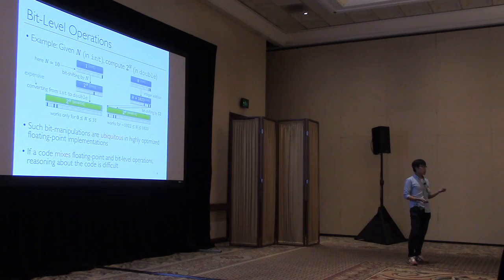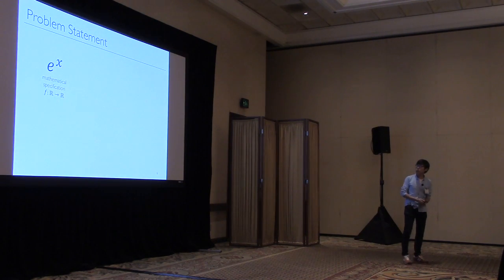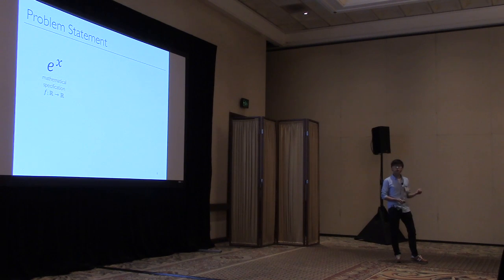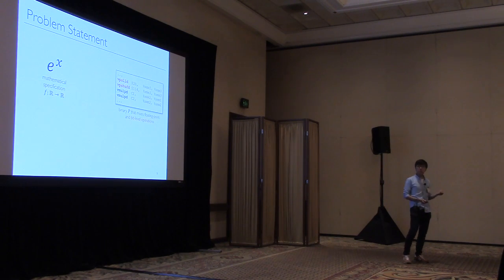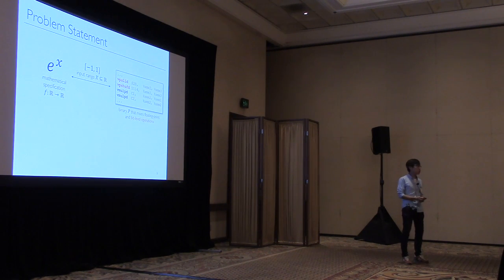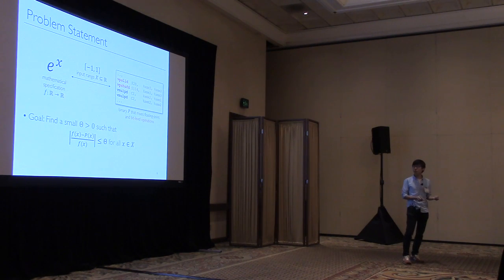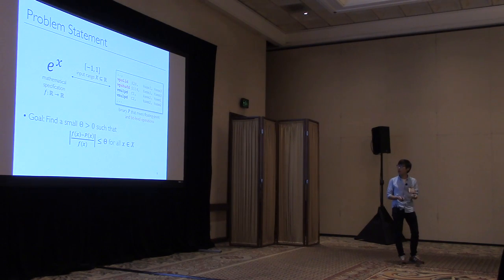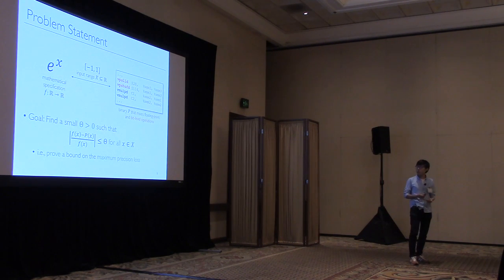Before I tell you how to solve this, I will first define the problem more precisely. Suppose you are given a mathematical specification f, such as the exponential function e to the x. We also have a floating-point binary p and a working range for x. Then our goal is to find a small quantity theta such that the precision loss of p with respect to f is smaller than theta for all inputs in range. In other words, we would like to prove a bound on the maximum precision loss.